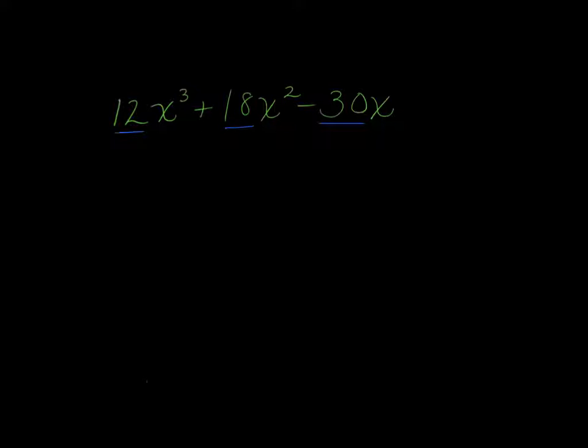Do you see a common factor between 12, 18, and negative 30? 2. Yes, actually. 2 times 6 is 12, 2 times 9 is 18, and 2 times 15 is 30. Now, the goal is to factor out the greatest common factor. Can you think of another factor that is common to all three of those numbers that is bigger than 2? 6. Okay, good. So we're going to pull out a 6.